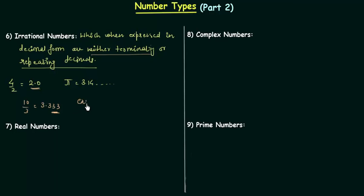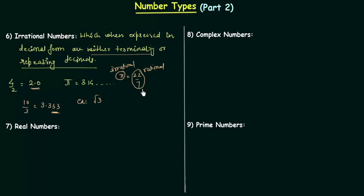Some more examples of irrational numbers are root 3. Remember one important thing: we often say pi equals 22 by 7, but 22 by 7 is rational and pi is irrational. 22 by 7 is only an approximation for pi — pi is not exactly equal to 22 by 7, so 22/7 is rational whereas pi is irrational.